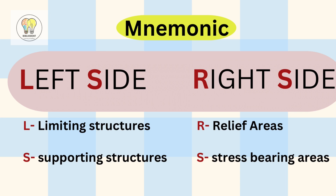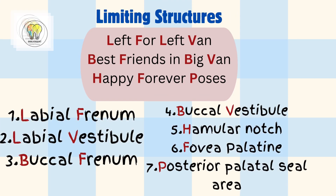Now let's see them in detail. Coming to limiting structures, the mnemonic is 'left van best friends in big van happy forever process.' The red colored letters indicate the limiting structures: L and F for labial frenum, L and V for labial vestibule, B and F for buccal frenum, P and V for buccal vestibule, H for hamular notch, F for fovea palatine, and P for posterior palatal seal area.